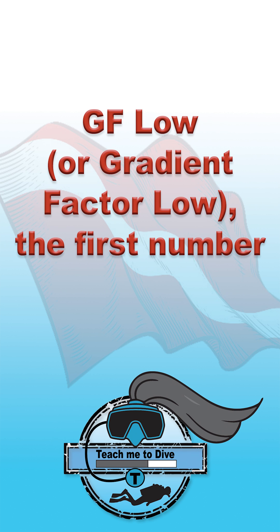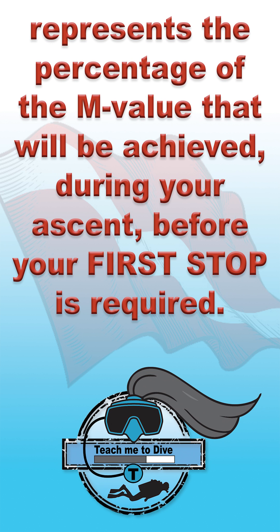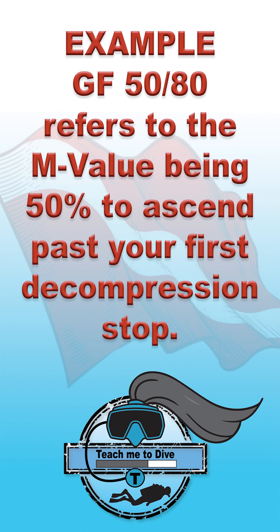GF low, or gradient factor low, is the first number. It represents the percentage of the M value that will be achieved during your ascent before your first stop is required. For example, GF 50/80 refers to the M value being at 50% to ascend past your first decompression stop.